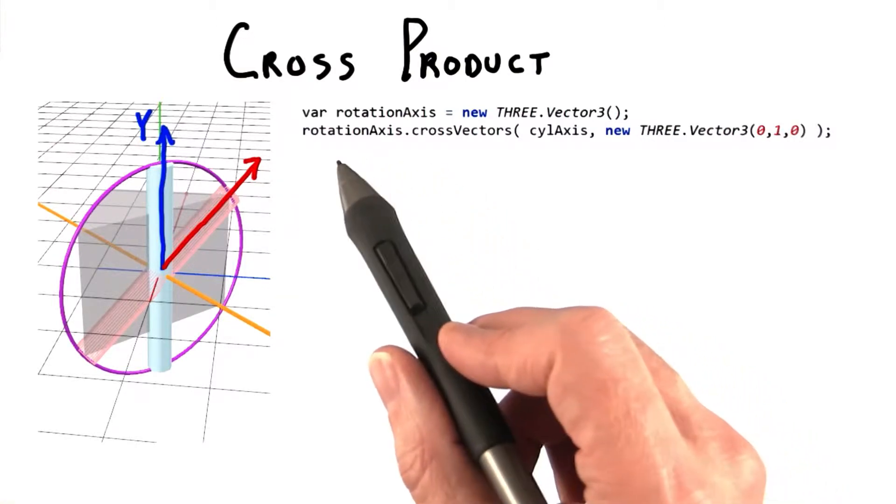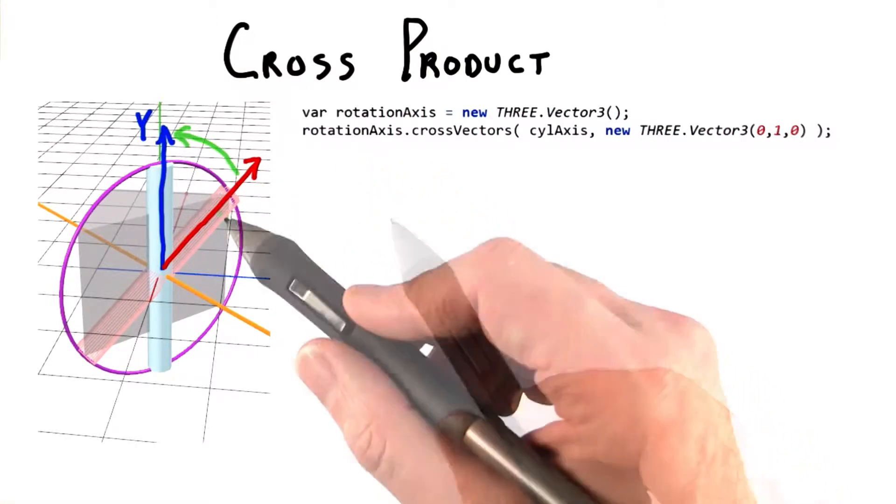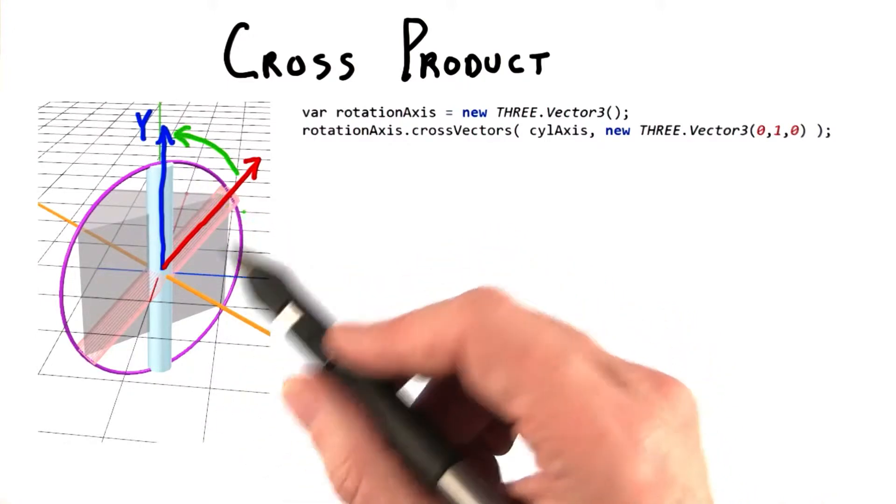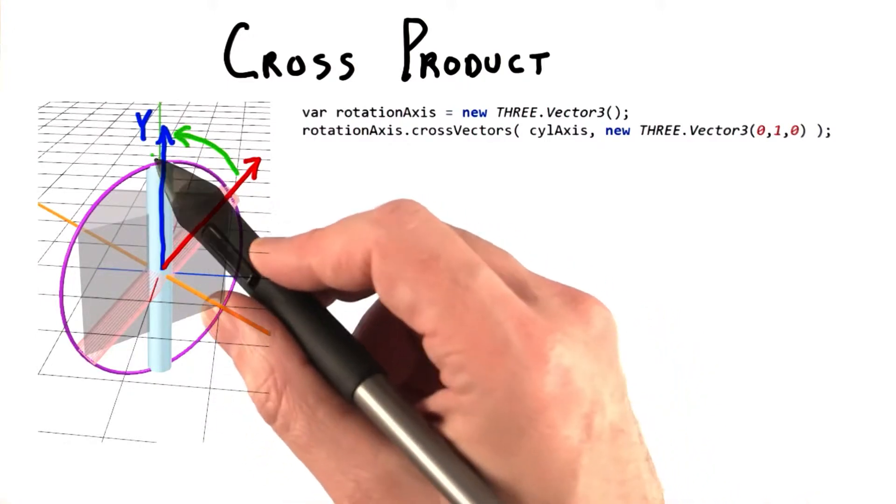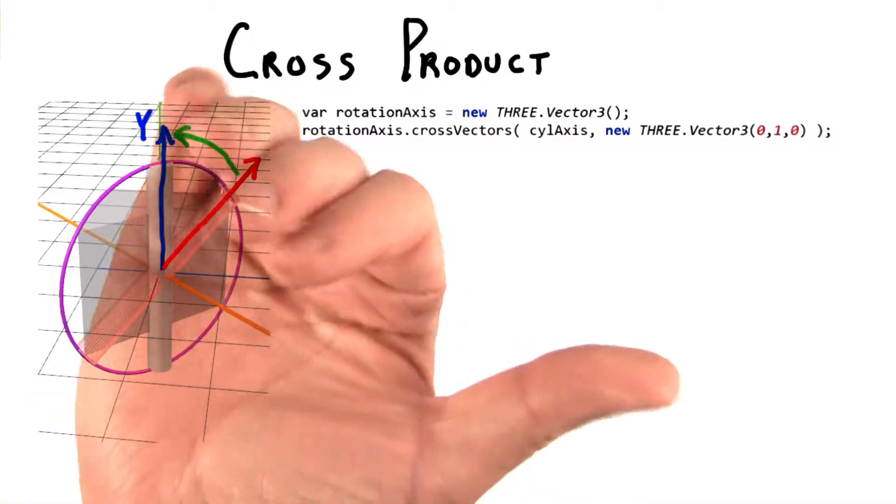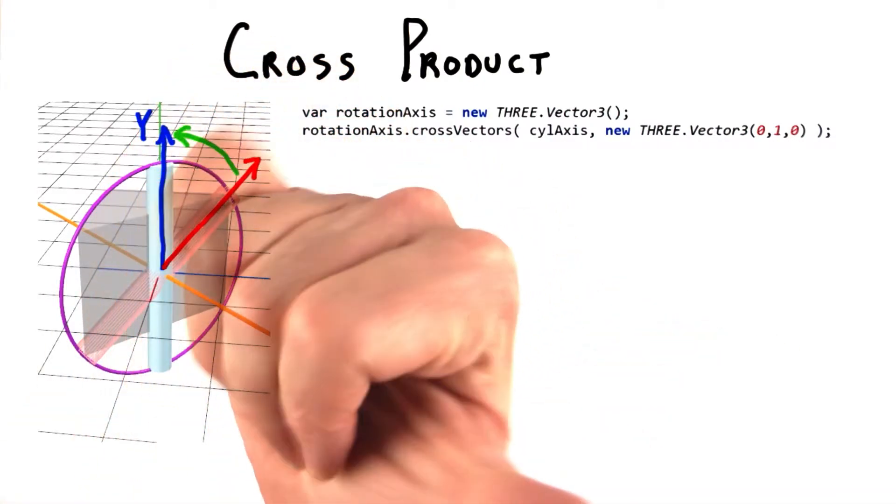The third vector is, in fact, the axis of rotation, or at least one of them. The direction is determined by the right-hand rule. You wrap your hand from the first vector, in this case our cylinder, to the second vector, in this case the y-axis. This then points along the axis of rotation.